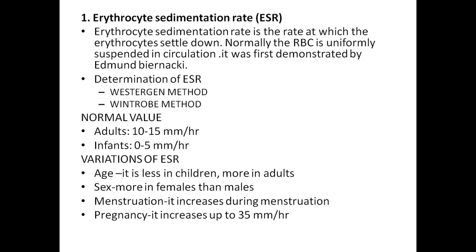The first question is erythrocyte sedimentation rate, otherwise called ESR. ESR is the rate at which erythrocytes settle down; normally RBCs are uniformly suspended in circulation. It was first demonstrated by Edmund Berkey. The determination of ESR is done by two methods: the Westergren method and the Wintrobe method. Normal value in adults ranges between 10 to 15 millimeters per hour; in infants it is 0 to 5. Variations of ESR include age — more in children, more in adults — and sex — more in females than in males. ESR increases during menstruation.